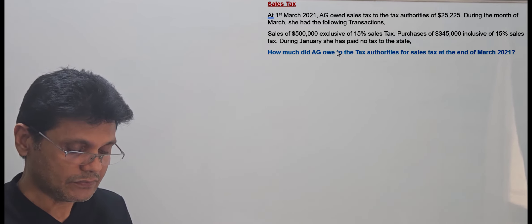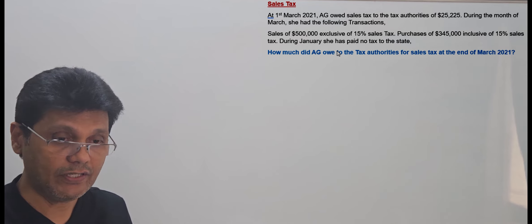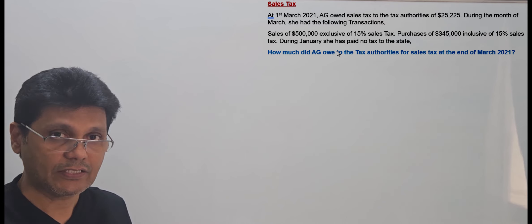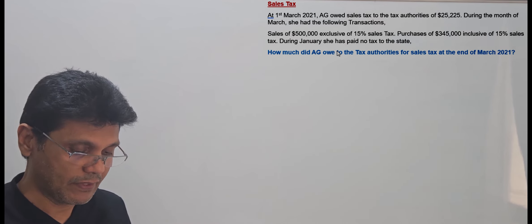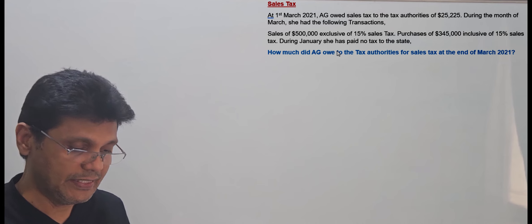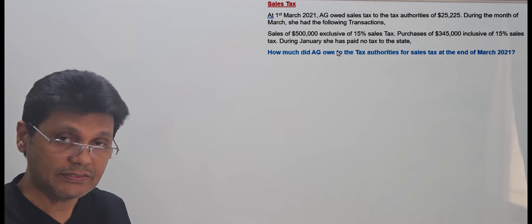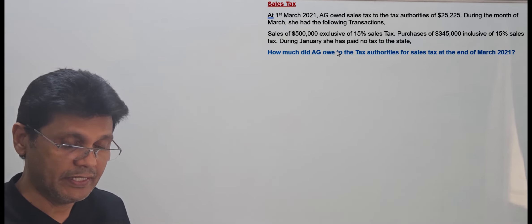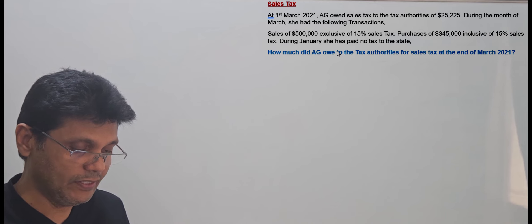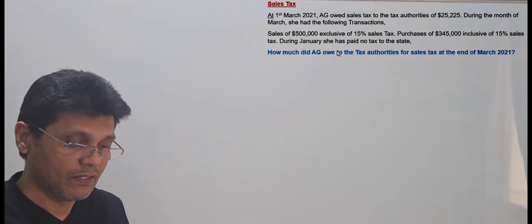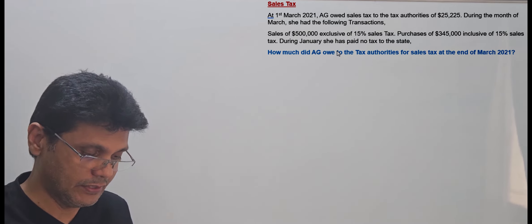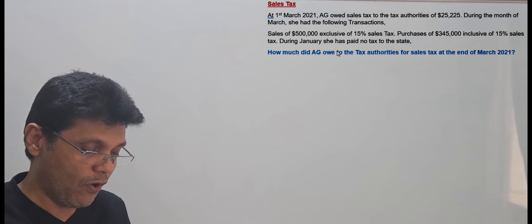There is an opening balance of $25,225 payable to the tax authorities — this is a liability. During March, there are two transactions: sales and purchases. On sales, you need to calculate the sales tax. The $500,000 is exclusive of 15% sales tax, meaning you collect the sales tax from customers and pay it to the tax authorities — so it is a payable amount.